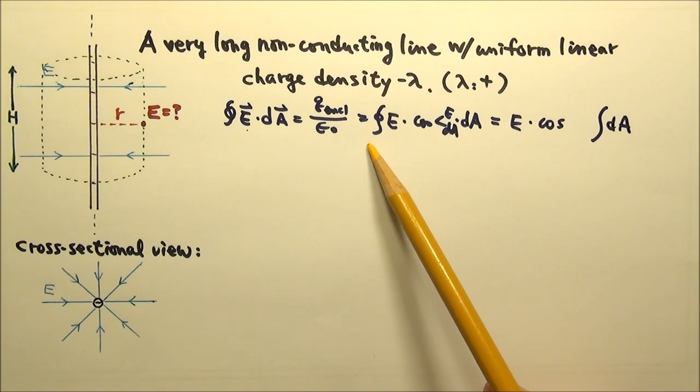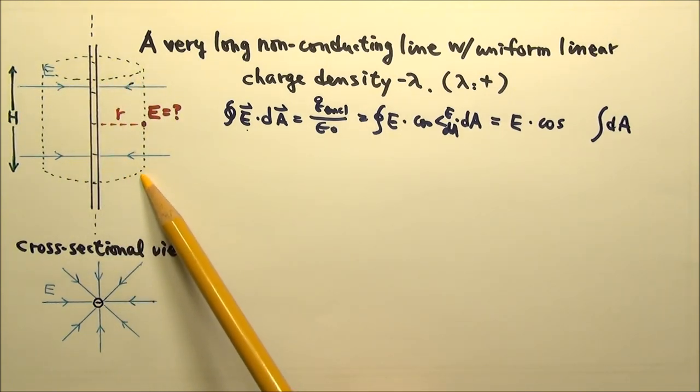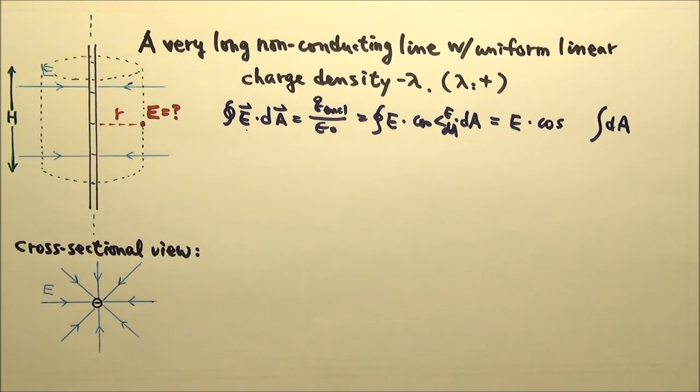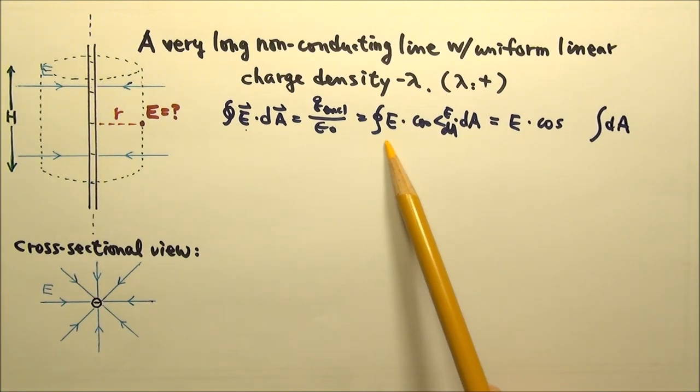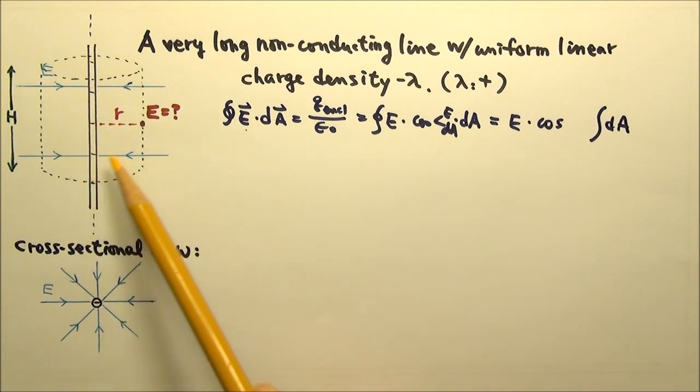But luckily, what is the flux through the top and bottom of the cylinder? It's zero. Because all the field lines go parallel to the top and bottom, none of the field lines go through them. So when we add up the flux, we only have to consider the part of the Gaussian surface that has non-zero flux, which in this case is the curved part of the cylinder.